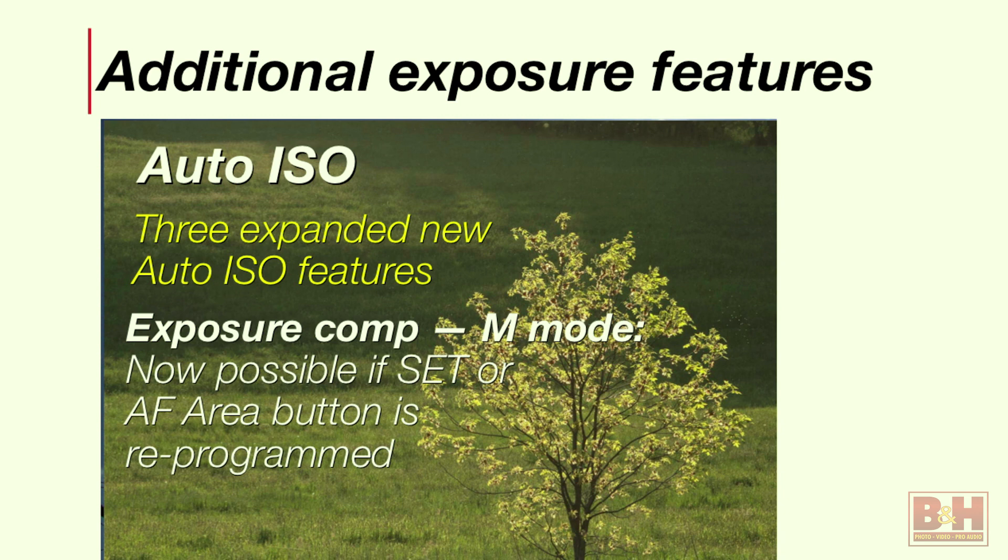Finally, there's a neat tool for people who like to work in manual exposure mode with auto ISO. You can now deliberately under- or over-expose — applying exposure compensation in manual mode with auto ISO. You can lock in, hypothetically, 1/500th at f/4, and the camera sets ISO automatically. What we couldn't do before was tell the system to deliberately lighten or darken the result. Now you can reprogram either the Set button or the new AF area button on the back of the camera, press it, turn the main dial, and deliberately lighten or darken pictures in manual mode with auto ISO working.